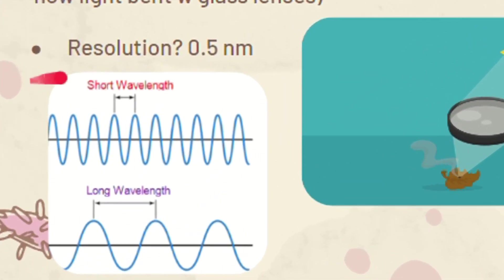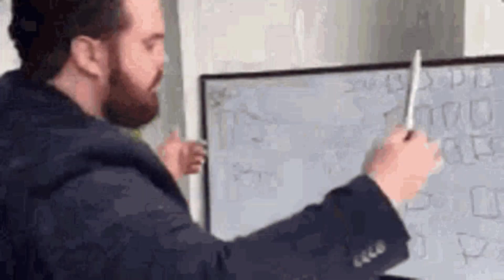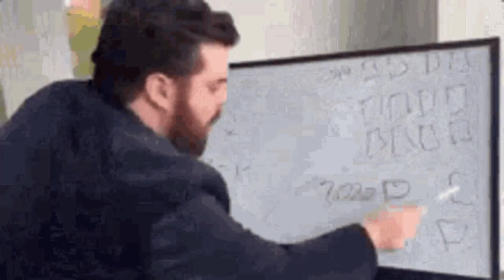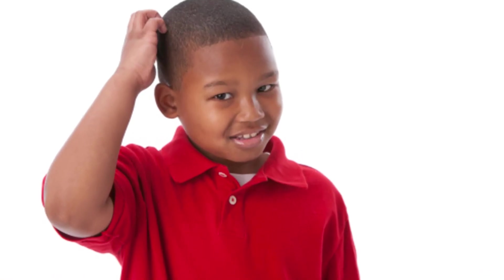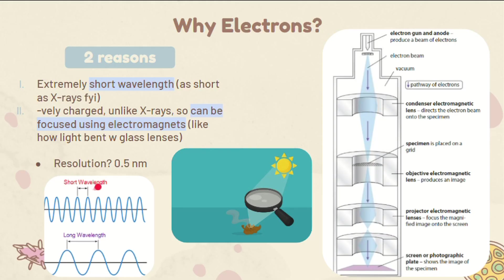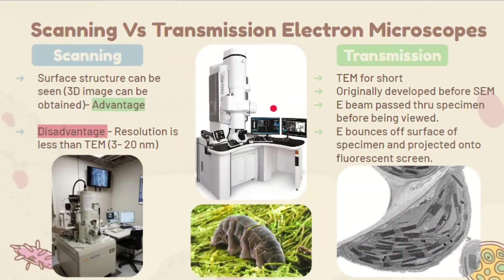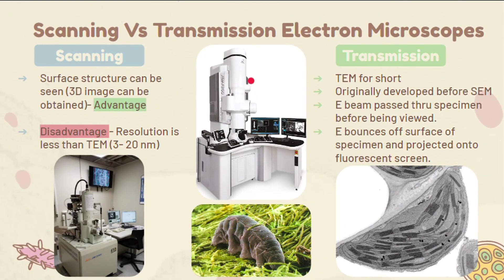A super short wavelength provides us with a resolution that is 400 times better than that of light microscopes, or an astonishing 0.5 nanometers. The resolution can vary, but that's because there are two main types of electron microscopes.